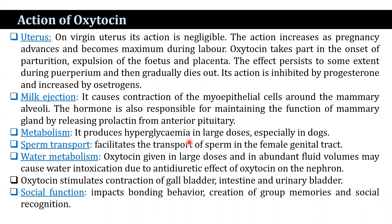Oxytocin acts on the uterus. On the virgin uterus, its action is negligible. The action increases as pregnancy advances and becomes maximum during labor. Oxytocin takes part in the onset of parturition, expulsion of the fetus and placenta. The effect persists to some extent during the puerperium — the period between childbirth and the return of the uterus to its normal size — and then gradually dies out. Its action is inhibited by progesterone and increased by estrogen.